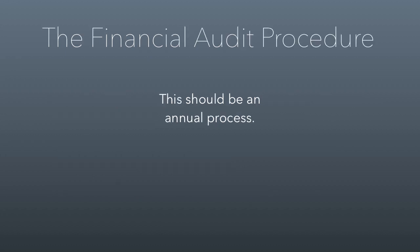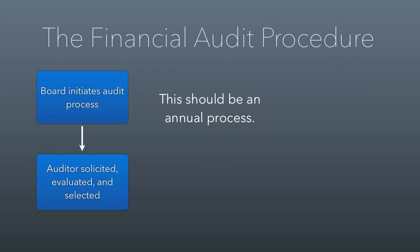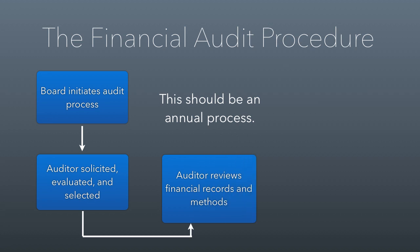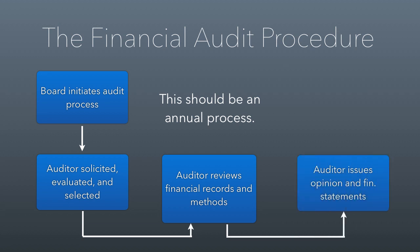This is how the audit process works, and it should be done every year. The board initiates the process by soliciting, evaluating, and selecting an auditing firm. That firm reviews financial records and methods to make sure they are accurate and well-done. The auditor then issues an opinion and financial statements. The important thing is to receive an unqualified opinion — which sounds counterintuitive, but it means there are no limitations or qualifications on the auditor's statement that your financials are accurate. A qualified opinion means they're reserving their recommendation based on certain problems they observed.